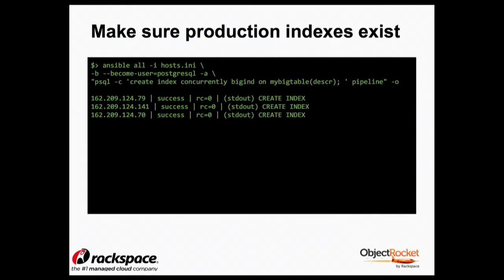What about making sure the indexes your application requires are there? This is a more powerful use case. Remember idempotency matters. You'd issue a create index concurrently statement on every database — you want to make sure they all have that index. You don't say tell me what indexes are out there; you say go make sure these indexes are out there. This is really cool after a push — developers write code, you know the dev system has XYZ index, that has to be on production. Implement that in a YAML file, call it a push script, run it after the code goes live.